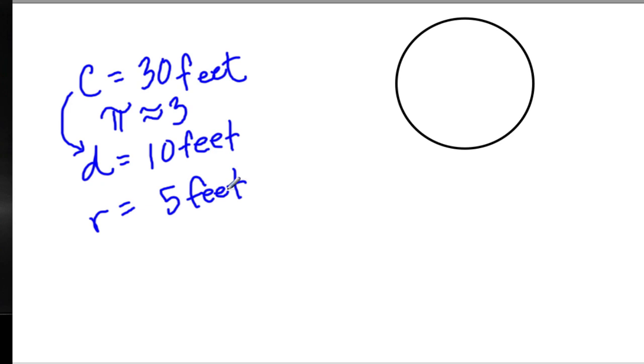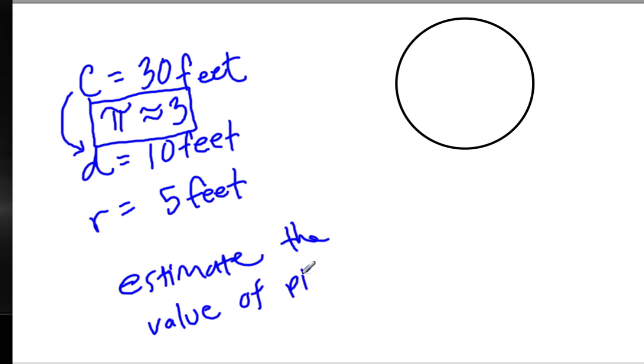The way they would word this problem, and this is an important thing to start thinking about, is they would want you to estimate the value of pi. Since pi is about 3.14159, when we estimate pi, we set pi equal to three. And that's what we did here. We used three as a value of pi.